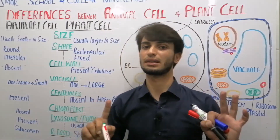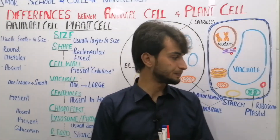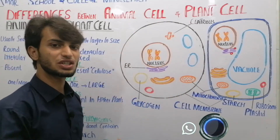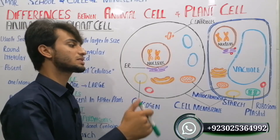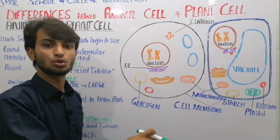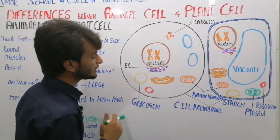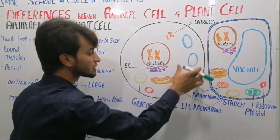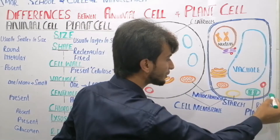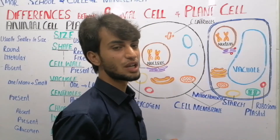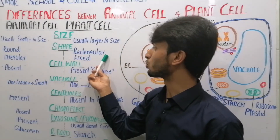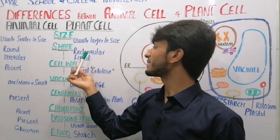The second difference is shape. Animal cells are mostly round in shape. It is important to note that this applies to most cells under general rules — not every single organism's cells must follow this exactly. Animal cell ki shape mostly round aur irregular hoti hai, while plant cell ki shape rectangular aur usually fixed hoti hai. So the second difference is shape: animal cells are round and irregular, plant cells are rectangular and fixed.